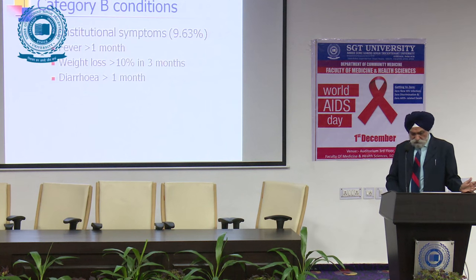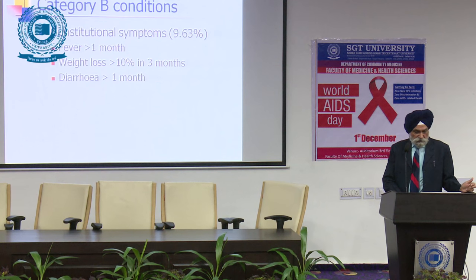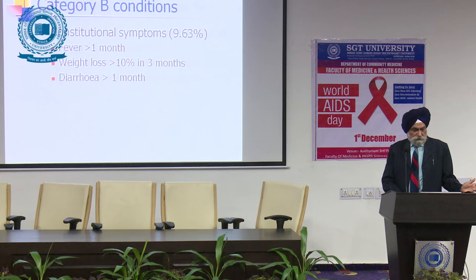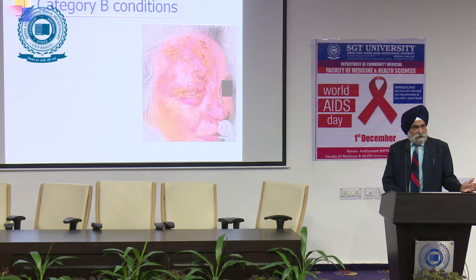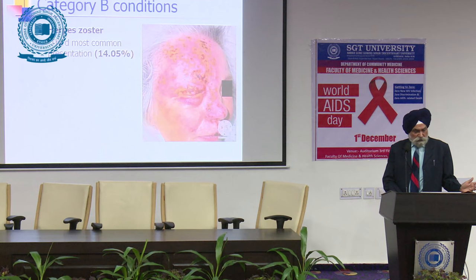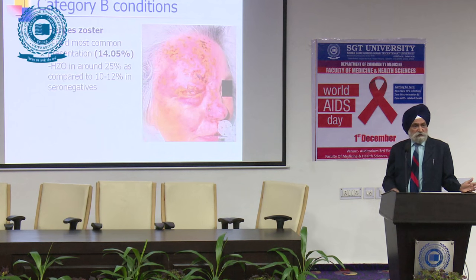Category B conditions include fever lasting more than one month, weight loss of more than 10% in the last three months, and diarrhea for more than one month. Ten percent of patients presented with these constitutional symptoms and were then diagnosed HIV positive. Herpes zoster was the third most common presentation — almost 14% of patients presented with herpes zoster, and herpes zoster ophthalmicus was much more common in HIV-positive patients than in HIV-negative patients.